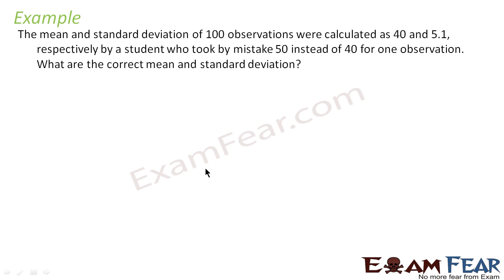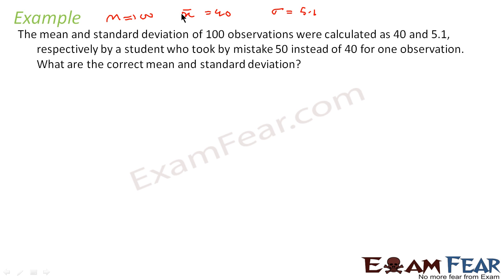The mean and standard deviation of 100 observations were calculated as 40 and 5.1 by a student who mistook 50 instead of 40 for one observation. We have to find the correct mean and correct standard deviation. So n = 100, and we have incorrect mean x̄ = 40 and incorrect standard deviation = 5.1.